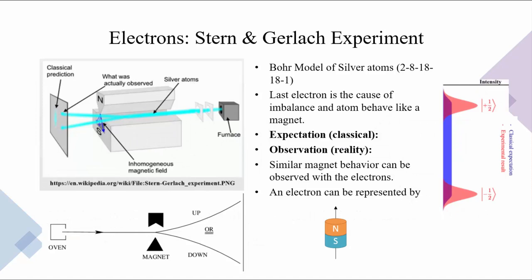One of the important experiments that visually illustrates how electrons behave in an isolated environment is the Stern-Gerlach experiment. They used silver atoms whose Bohr model contains two, eight, eighteen, eighteen, and one outer electron across five different energy levels from low to high respectively. In that configuration, the last electron at the highest energy level is the root cause of imbalance, and the atom starts behaving like a magnet.